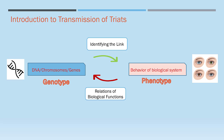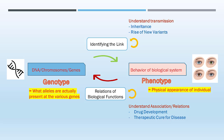One of the main areas we have understood about transmission is that we can link up genotype with phenotype. We define genotype as what alleles are actually present at the various genes, whilst phenotype is referred to as the physical appearance of individuals. In identifying the link, we aim to better understand transmission, which includes inheritance and rise of new variants in genetics.